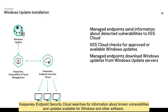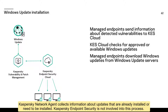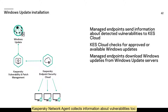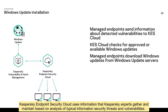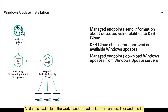Kaspersky Endpoint Security Cloud searches for information about known vulnerabilities and updates available for Windows and other software. Kaspersky Network Agent collects information about updates that are already installed or need to be installed. Kaspersky Endpoint Security is not involved in this process. Kaspersky Network Agent collects information about vulnerabilities too — it automatically monitors application launches and additionally scans all applications installed on the computer. Kaspersky Endpoint Security Cloud uses information that Kaspersky experts gather and maintain based on analysis of typical information security threats and vulnerabilities.